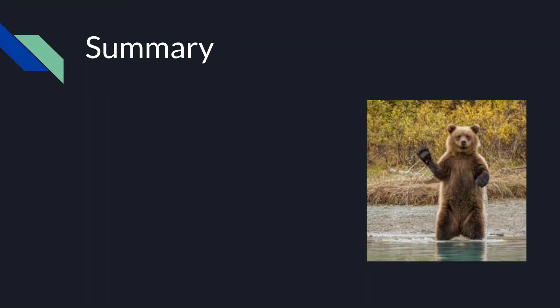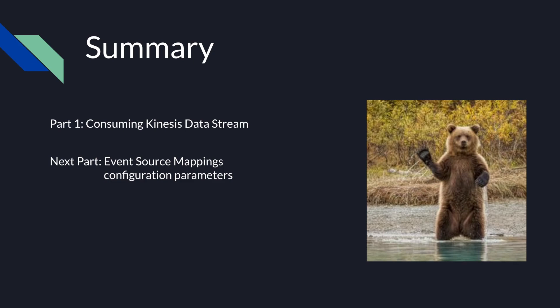That's it for the first part of my Kinesis with Lambda tutorial on consuming a Kinesis data stream. In the next video, I'll go over the different configurations for consuming a stream using event source mappings. Please let me know if you have any questions down below. I hope you enjoyed it and it gave you value. If you want to learn more about AWS and all types of coding-related topics, please consider subscribing. Thanks, see you in the next video.